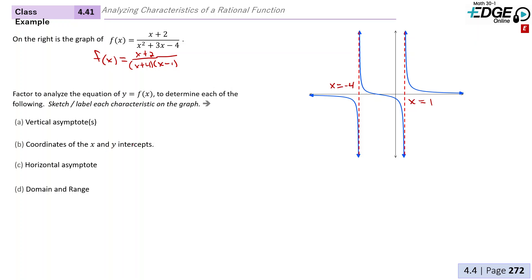Now the coordinates of the x and y intercepts. Well, the x-intercept is easy as well because it relates to the numerator of the function. What would make our numerator equal to 0? Well, if x was -2. So we have an x-intercept at (-2, 0).